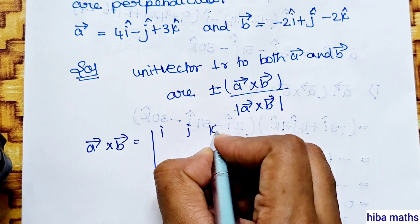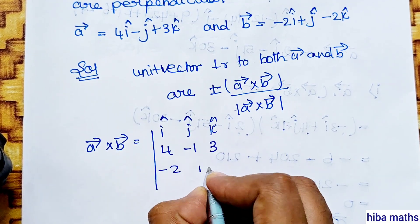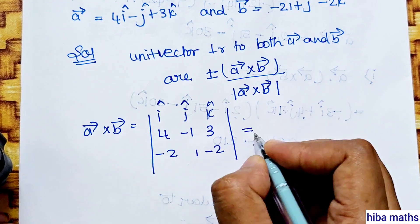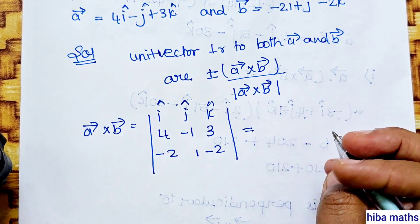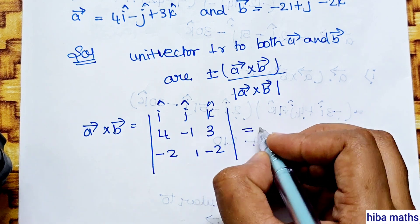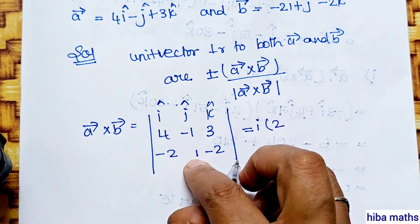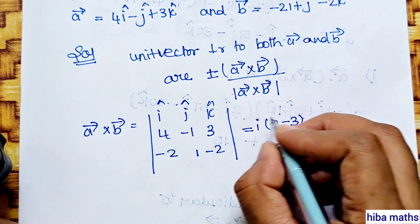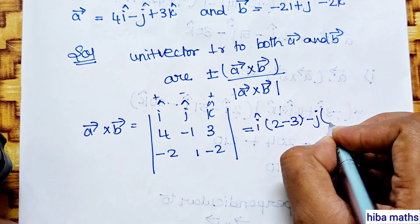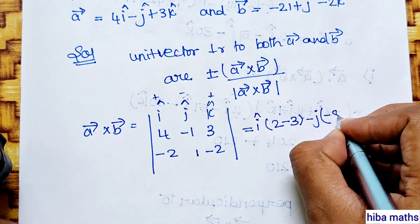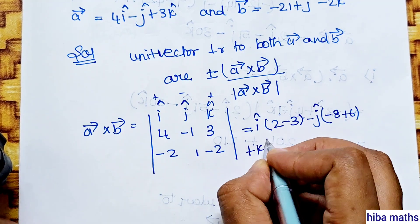Matrix is i, j, k; 4, minus 1, 3; minus 2, 1, minus 2. Solving: i into first row first column, minus 2 into minus 1 is plus 2, 3 plus 3 minus 3 equals minus 1. Minus j into first row second column: minus 8, minus 6, then plus 6. Then plus k.